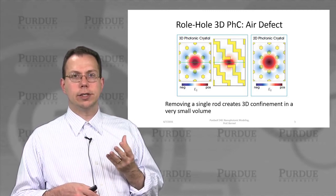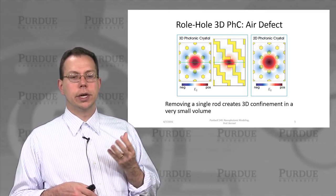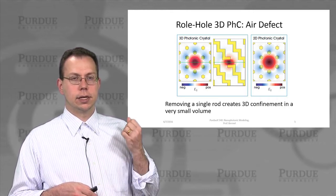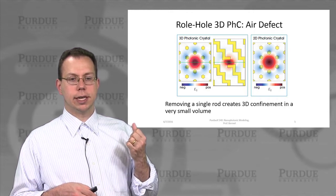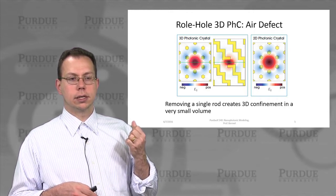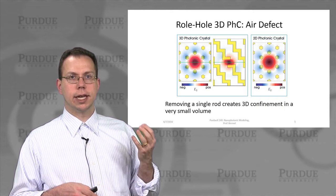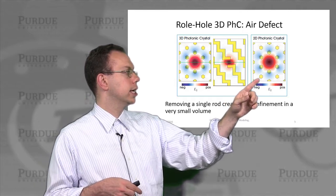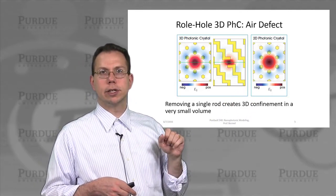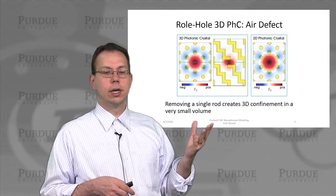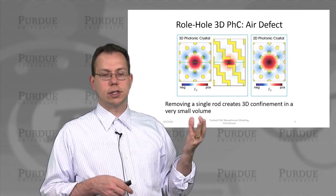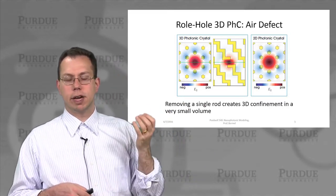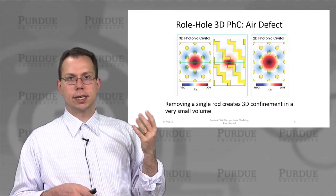You can do some really interesting things with this sort of structure. You can remove specific defects — for example, point-like defects in the array of rods. When you have that defect, it behaves almost exactly the same as in the 2D photonic crystal case discussed a few lectures ago. This means it creates confinement in the plane, though it's not necessarily obvious that it creates confinement out of the plane because there may be an index guiding issue.